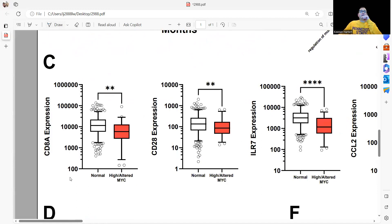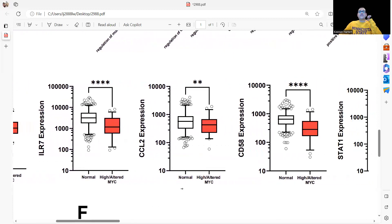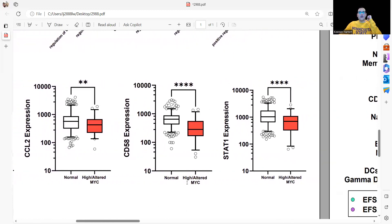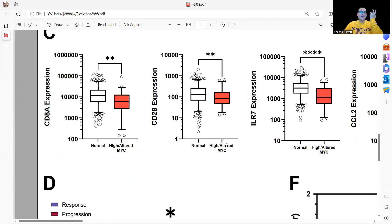Moving on, in the data set that we're using, Zumona 2020 et al., we can see that in this 418 patient data set, you can highlight people that have high or DNA-altered MYC. When we take a look at expression levels of CD8A, CD28, IL7R, CCL2, CD58, and STAT1, we see this low in every case when you have the high MYC phenotype.